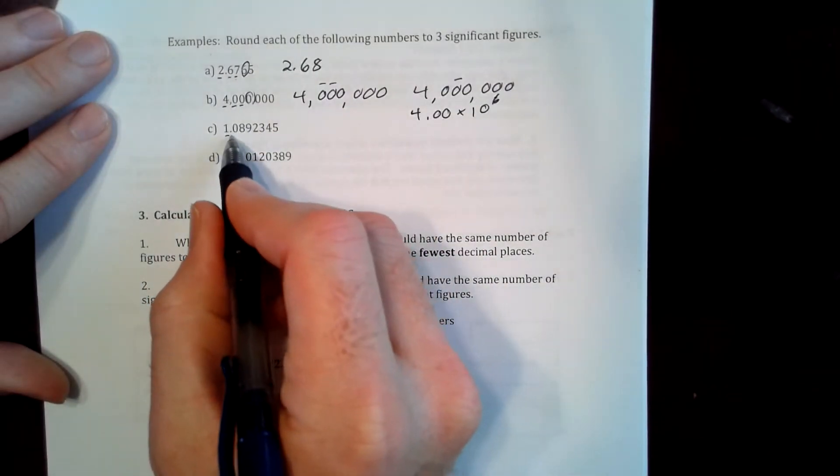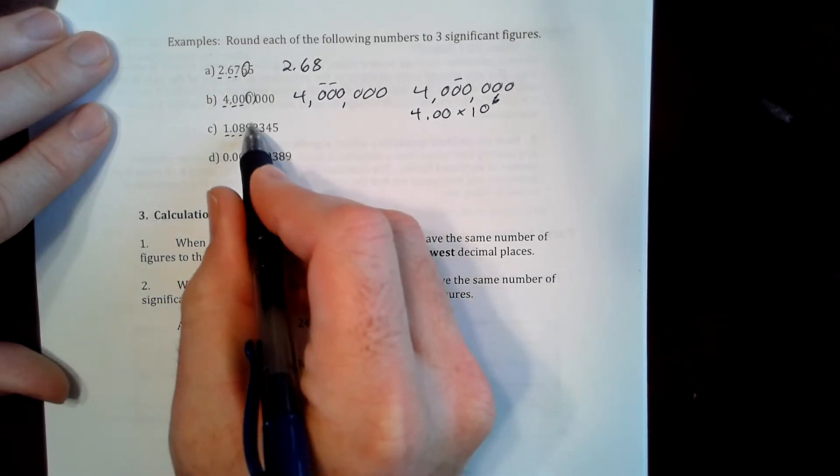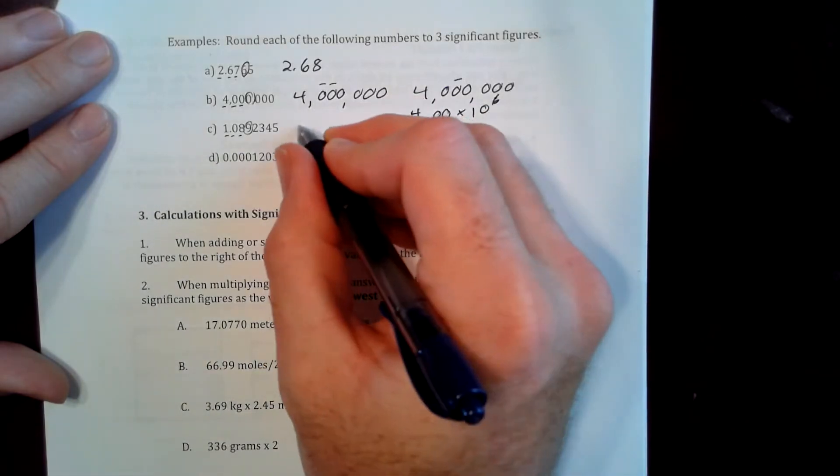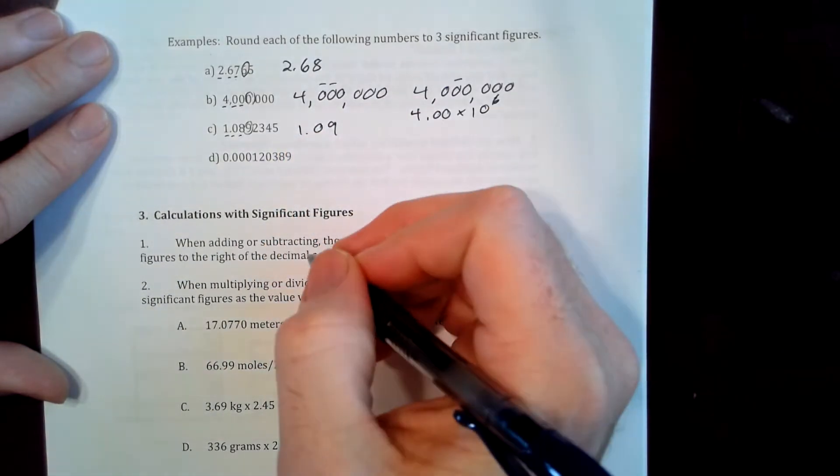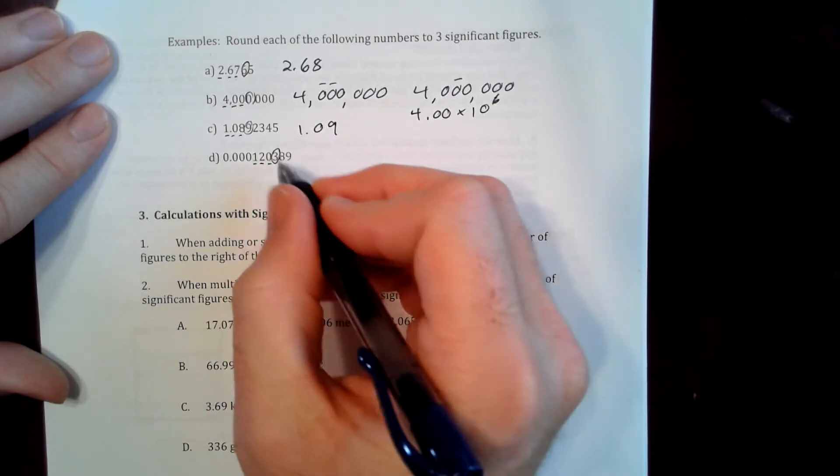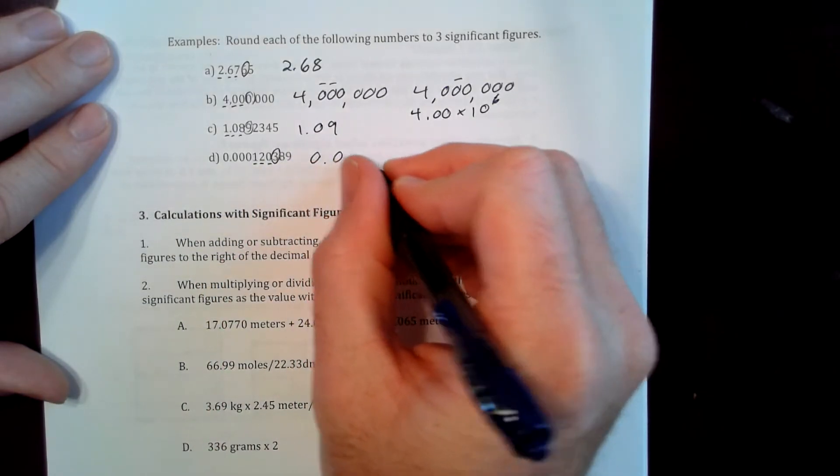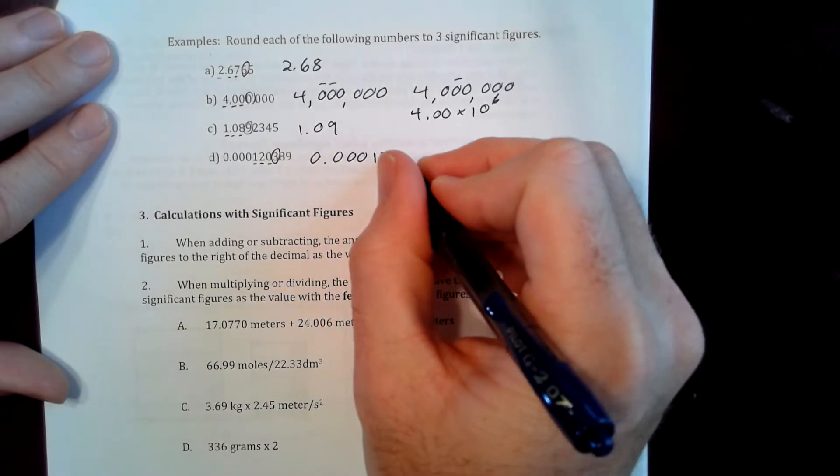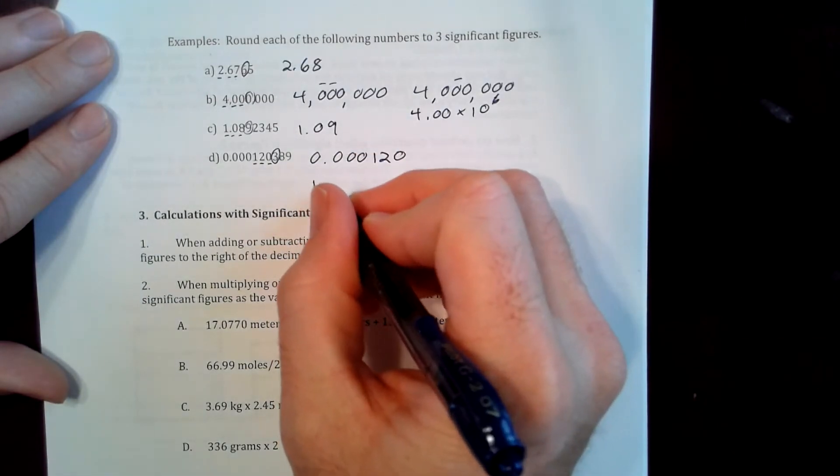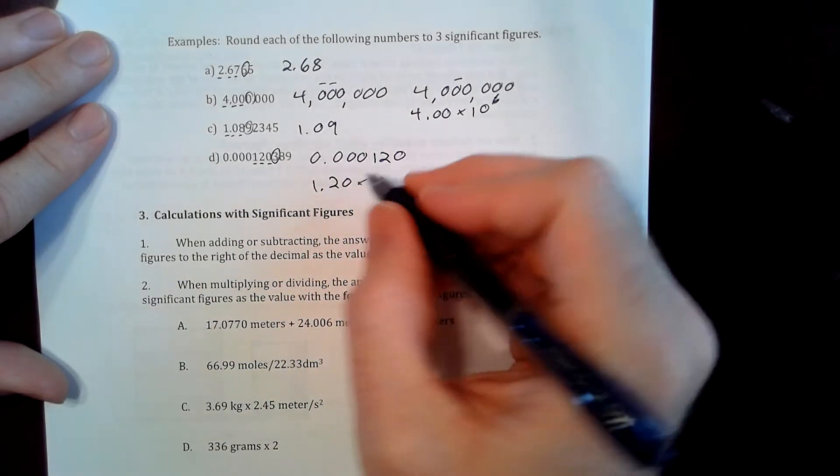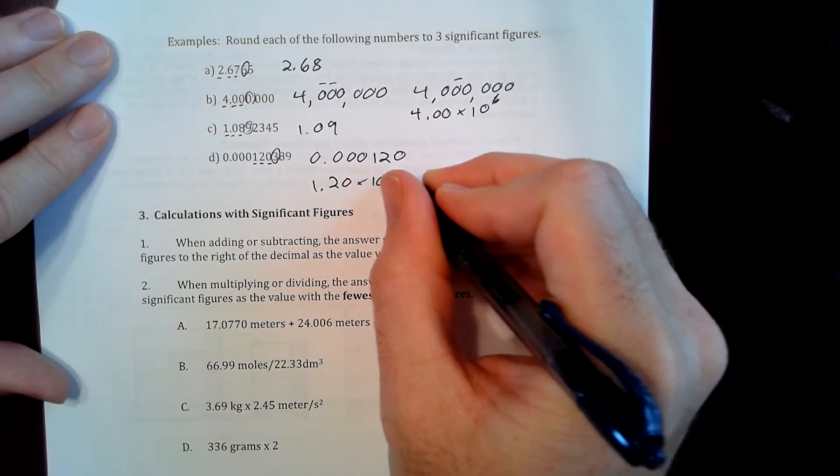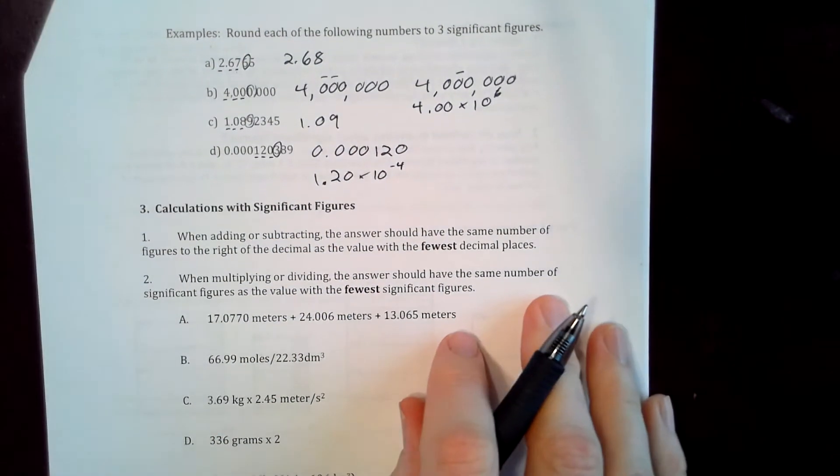Then you can do the first three right here. And there's a circle. So that's our rounding digit. Nine rounds up, so it's going to be 1.09. And then our first three here. Three rounds down, so it's going to be 0.000120. Again, you can put it in scientific notation. 1, 2, 3, 4. So 10 to the minus 4.